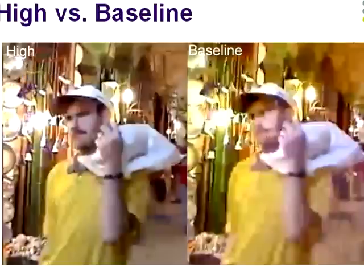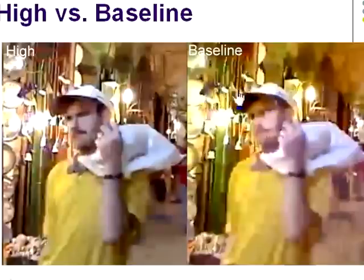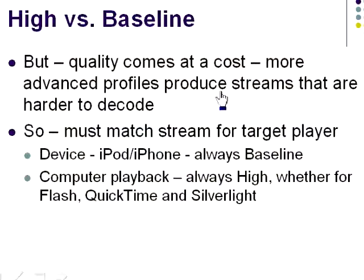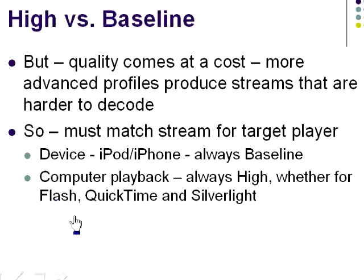Here you see two files encoded to identical parameters — resolution, data rate, and the like — with the file on the left produced using the high profile and on the right using the baseline profile. Obviously the quality is better on the left. But that quality comes at a cost: the advanced algorithms used in higher profiles produce a bitstream that's harder to decode. You never want to produce a stream that's too complex for the playback device to play. The general rule is to use the baseline profile when producing for iPods and other devices, and the high profile when producing for computer playback — whether for Flash, QuickTime, or Silverlight.